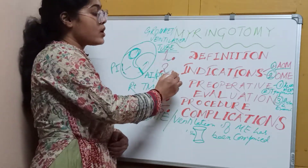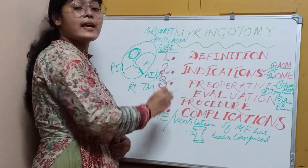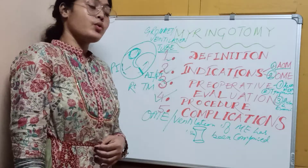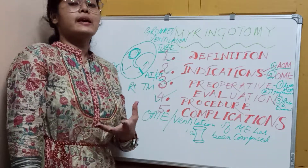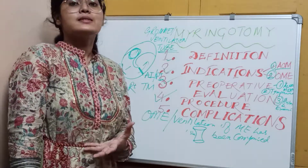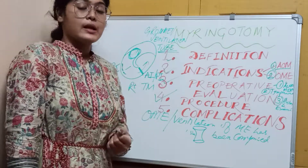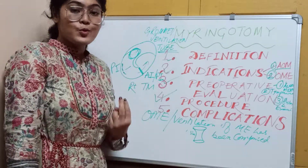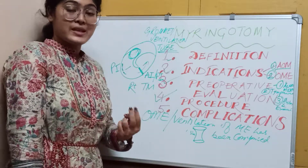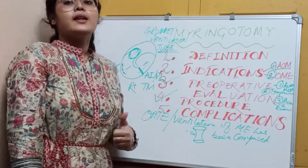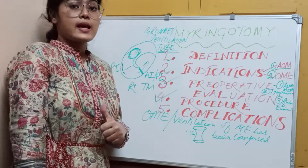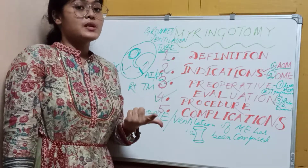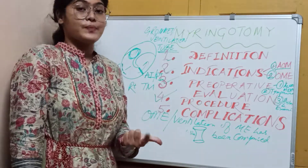Now, what are the indications of Myringotomy — that is, when do you make an incision in the tympanic membrane? There are broadly two indications: number one is acute otitis media, and number two is otitis media with effusion.